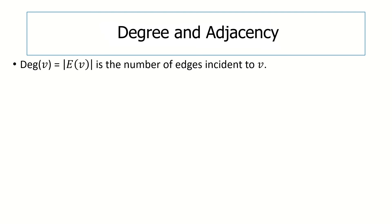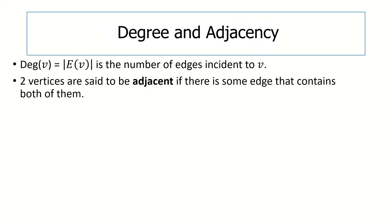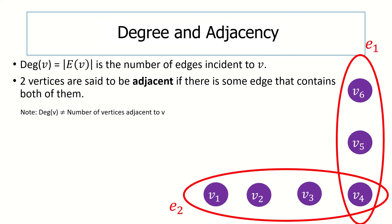Moving on, let's look at the degree of a vertex in a hypergraph. We define the degree of a vertex to be the number of edges that are incident to it. For adjacency, just like in graph theory, two vertices are said to be adjacent if there exists an edge that they are both incident to. Notice, however, that the number of vertices adjacent to a vertex V is not necessarily the same as the degree of V. For example, in this hypergraph, vertex V sub 4 has degree 2 as two edges contain it, but it's adjacent to five vertices: V sub 1, V sub 2, V sub 3, V sub 5, and V sub 6. So remember, degree is the number of edges incident to a vertex, which is not necessarily equal to the number of vertices adjacent to a vertex.